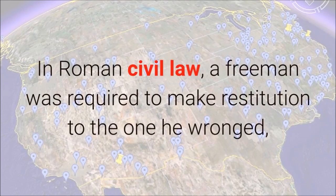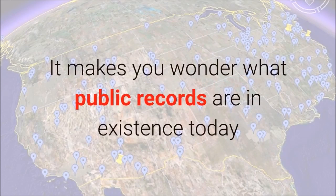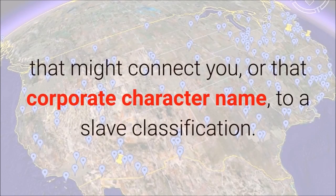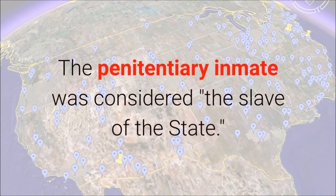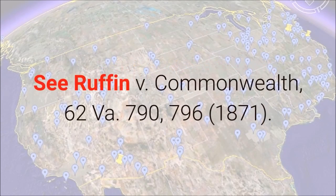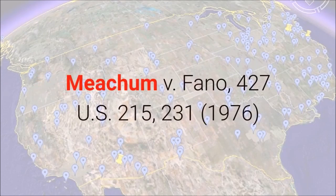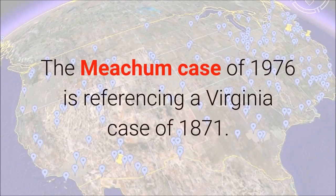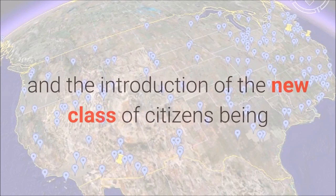In Roman civil law, a freeman was required to make restitution to the one he wronged, to work off his debt. But if he were a slave, he could be put to death. It makes you wonder what public records are in existence today that might connect you, or that corporate character name, to a slave classification. From what we have seen, it is possible only slaves are in prison. The penitentiary inmate was considered the slave of the state. Ruffin v. Commonwealth, 62 Va. 790, 796, 1871. Meacham v. Fano, 427 U.S. 215, 231, 1976. The Meacham case of 1976 is referencing a Virginia case of 1871. This is just after the Civil War era and the introduction of the new class of citizens being freedmen owing allegiance to the national political society.